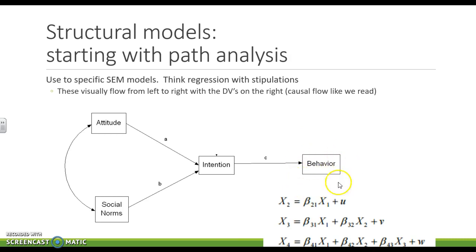And these are causing this. So this is our final dependent variable. So we have behavior being predicted by intention. But intention is predicted by attitude and social norms.